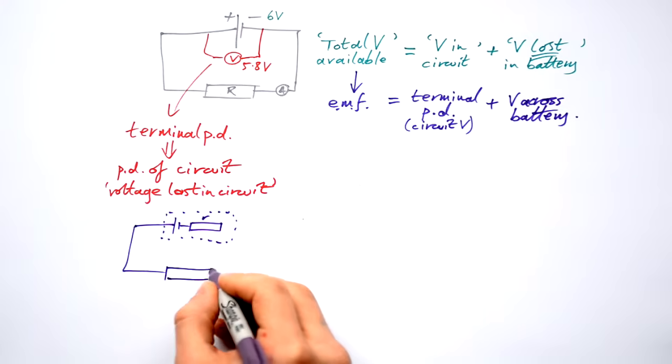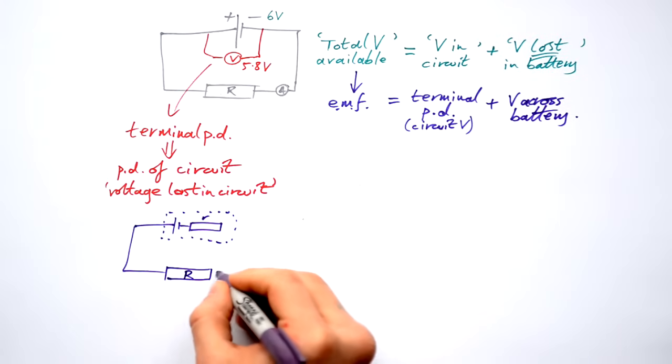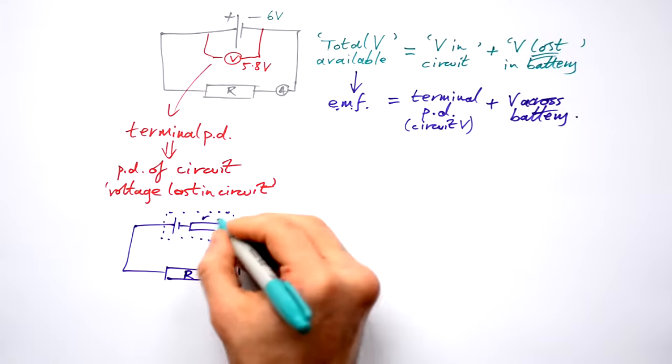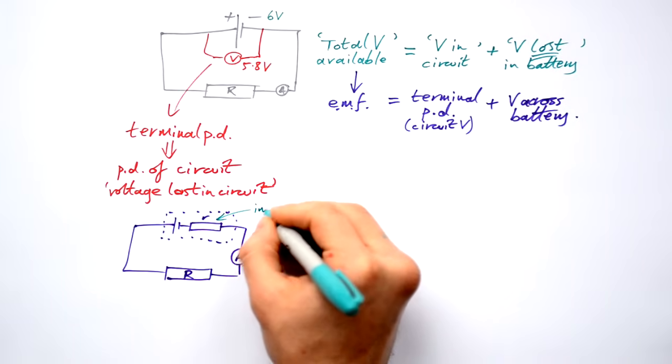We'll give that the little r symbol. We still have our load resistance. We still have our ammeter there. So this is what we call our internal resistance.